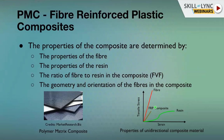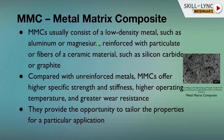MMCs consist of a low-density metal matrix — such as aluminium or magnesium — reinforced with particulate or fiber ceramic materials like silicon carbide or graphite. Silicon carbide or graphite become the load-bearing members of the composite, while the aluminium or magnesium alloy serves as the matrix.